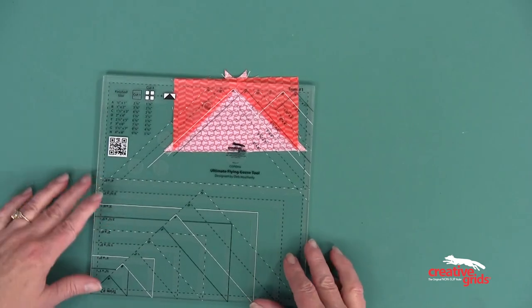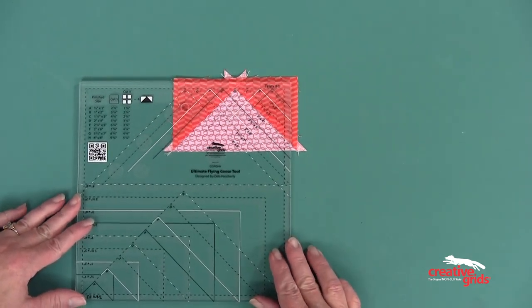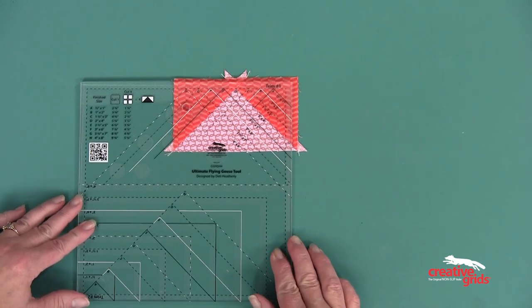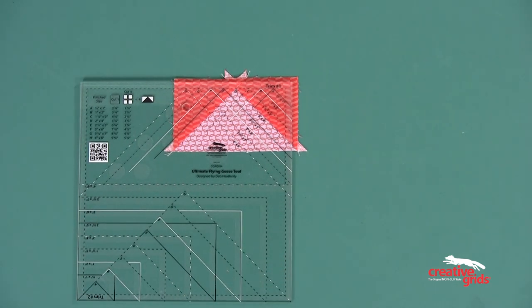Now use the Ultimate Flying Geese tool to trim your units. Place the trim one side of the tool on one of the goose sections. Select the appropriate size and align the sides and the point of the goose. Trim along the right side and the top.